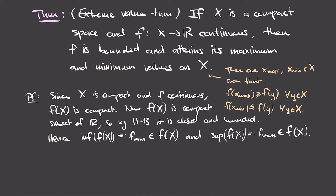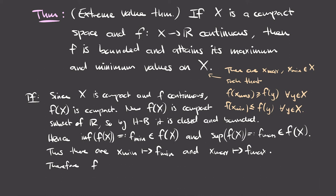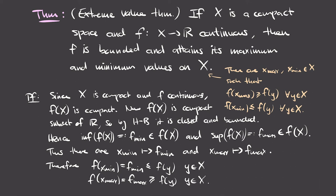Because f(X) is a closed and bounded subset of the real line, it contains its infimum and supremum. Let f_min be the infimum and f_max the supremum of f(X); both lie within f(X). Since they lie in the image, there must be points x_min and x_max in X mapped to f_min and f_max respectively. Therefore f(x_min) ≤ f(y) and f(x_max) ≥ f(y) for all y in X, proving the proposition.